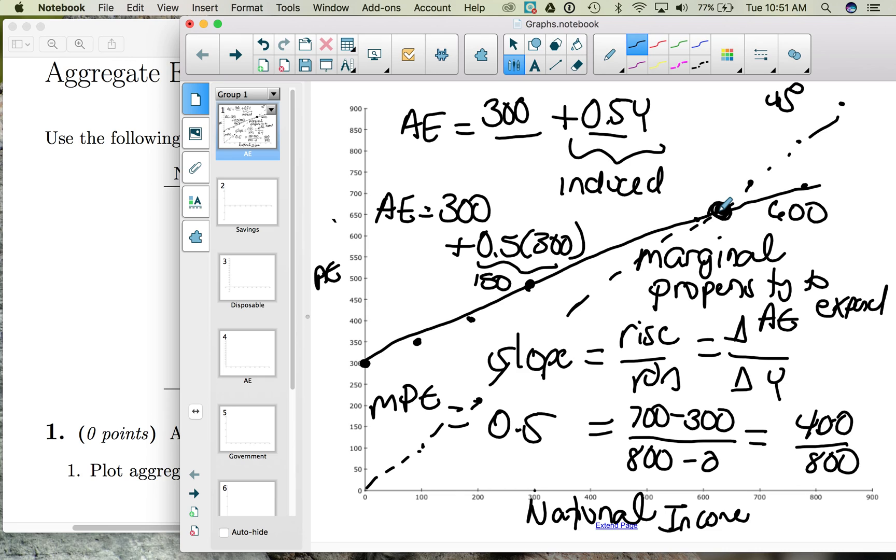What we're going to look at is where this aggregate expenditure function comes from, what changes it, and ultimately what will change that equilibrium size of the economy.